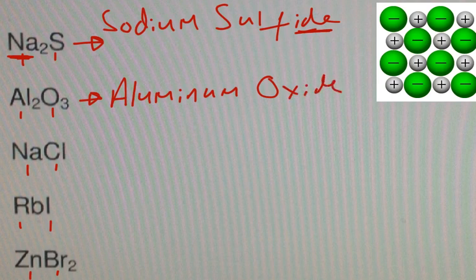Now notice, they have a little subscript here, but they don't affect the name. It's understood it's aluminum oxide. When you do crisscross, you get those subscripts, but in terms of the name, we didn't have to do anything with that.